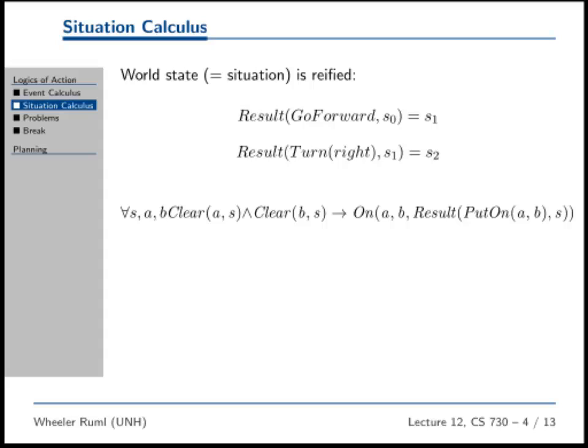In the situation calculus, there are no events — the event is kind of lost. The event happens inside the result function, between S and the result of action S. It's kind of hard to talk about the event itself. We can talk about the action that was done — that's the put-on action — but it's a little hard to say a lot more. Time here is very sequential: one thing happening at a time, transitioning from one situation to the next after each result.